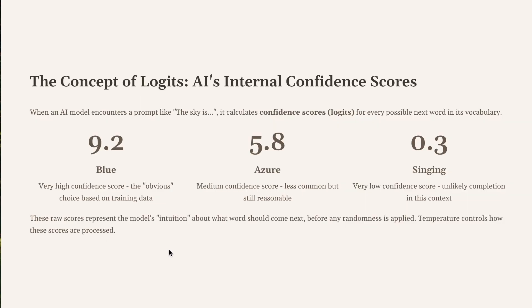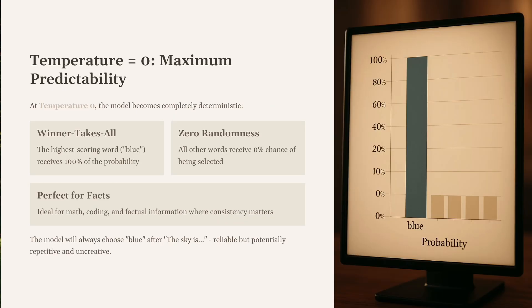Imagine we prompt the AI with 'the sky is.' Internally, the model calculates a confidence score called a logit for every possible next word. Blue gets a very high score, azure gets a medium score, and singing gets a very, very low score. At temperature zero, it's a winner-take-all scenario — the model ignores all other options and will always pick the word with the highest score.